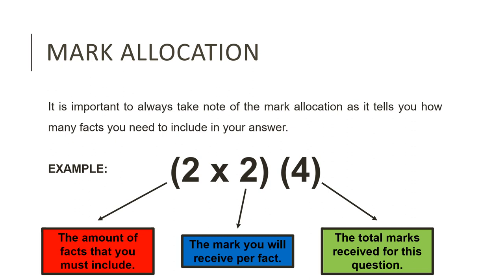The first number in the mark allocation is the most important because it tells you how many facts the examiner wants you to write in your answer. The second number tells you how many marks you will receive for every fact that you write down, and the third number is the total marks you will receive. For example, a typical mark allocation reads 2 times 2 equals 4. This means you have to write down two facts, and for each fact you write down, you receive two marks, giving you four marks in total. Always take the mark allocation into consideration before answering a question.